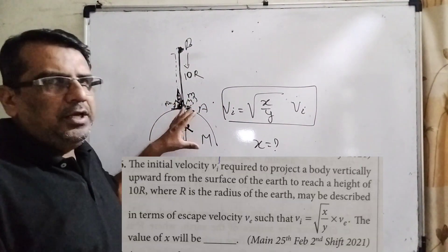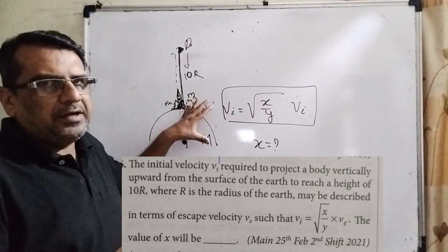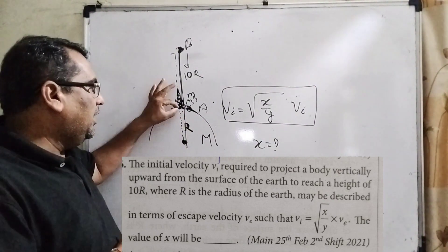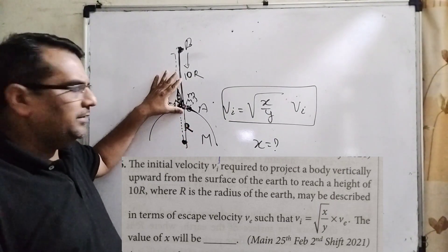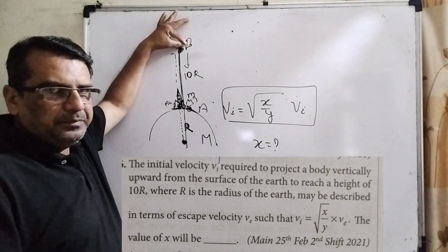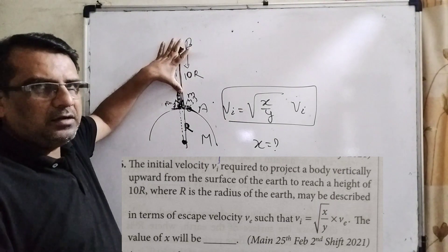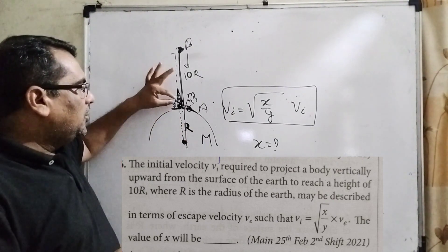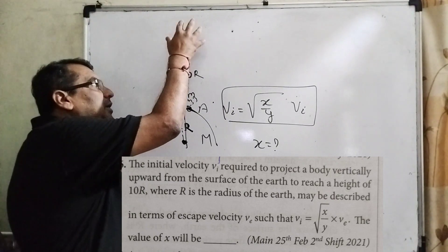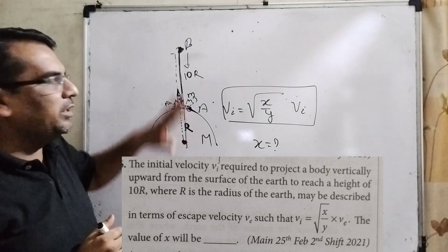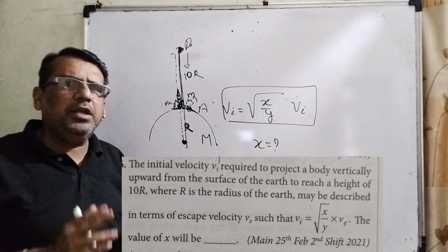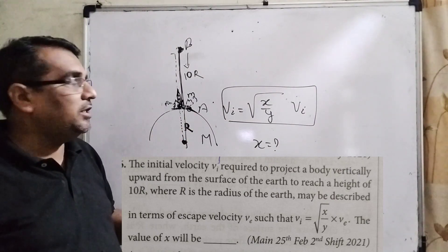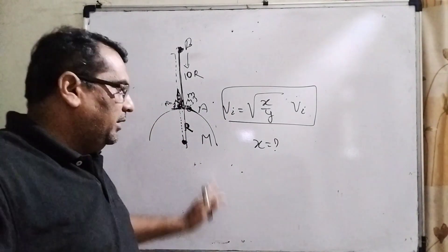Now, firstly we have to find out on which fact the question is based. The question is based on the law of conservation of energy. Any object — here we consider a satellite — which is ejected and reaches up to height B. The distance given from the surface of the earth is 10R. The radius of the earth is capital R and mass of the earth is M. Total energy at point A equals total energy at point B. This is the gist of this question. Whenever you have to solve any question, firstly read it thoroughly and find out what is the central idea and what data is given.